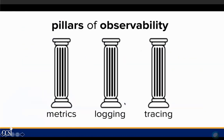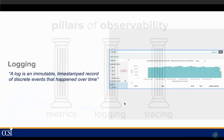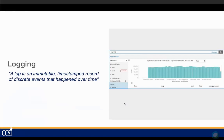There are three pillars of observability: metrics, logging, and tracing. Logging has been around since the beginning of systems. It's an immutable timestamp record of discrete events that happened over time — this person logged in, this process died, this process started. It's simply a log of what happened.